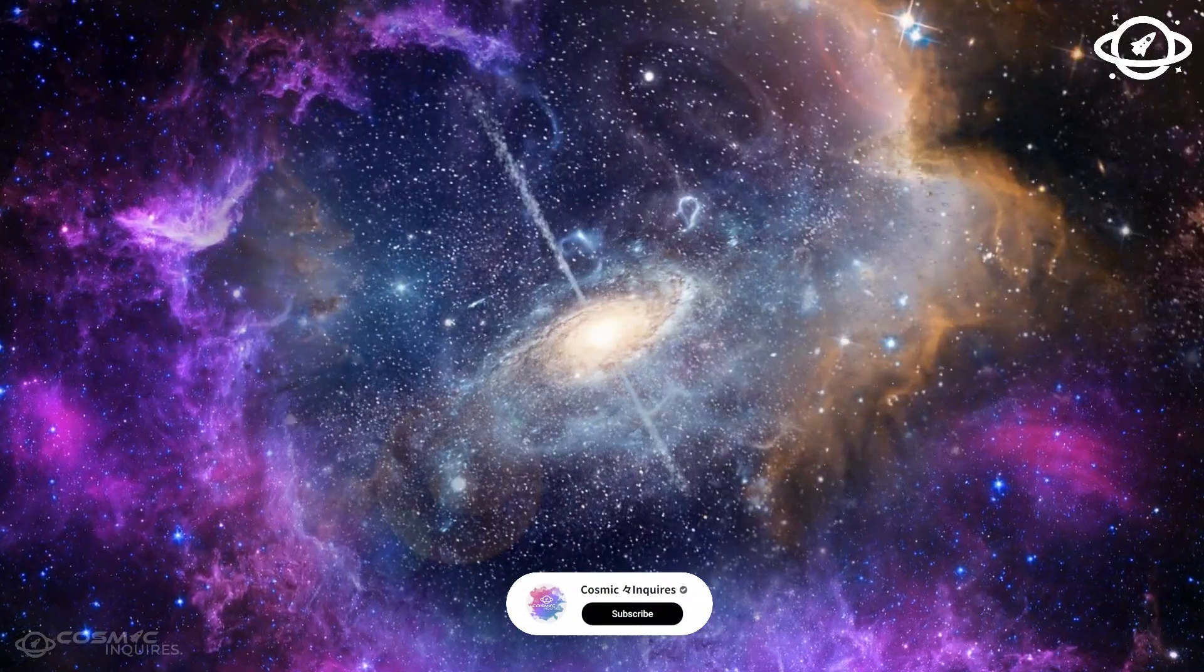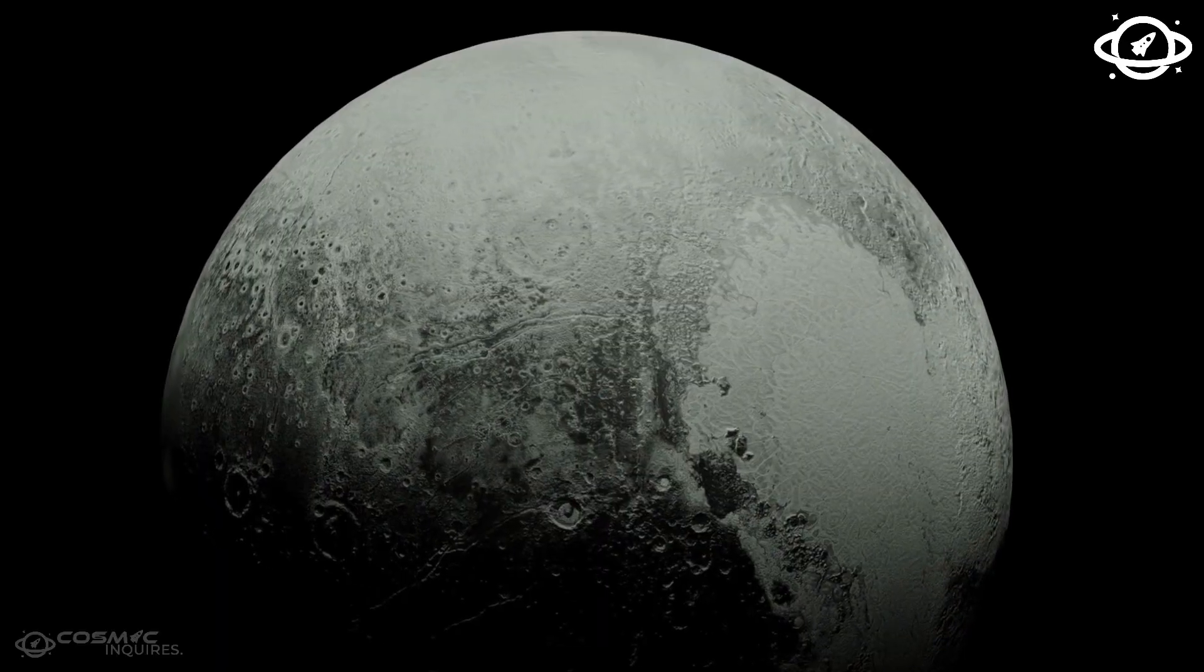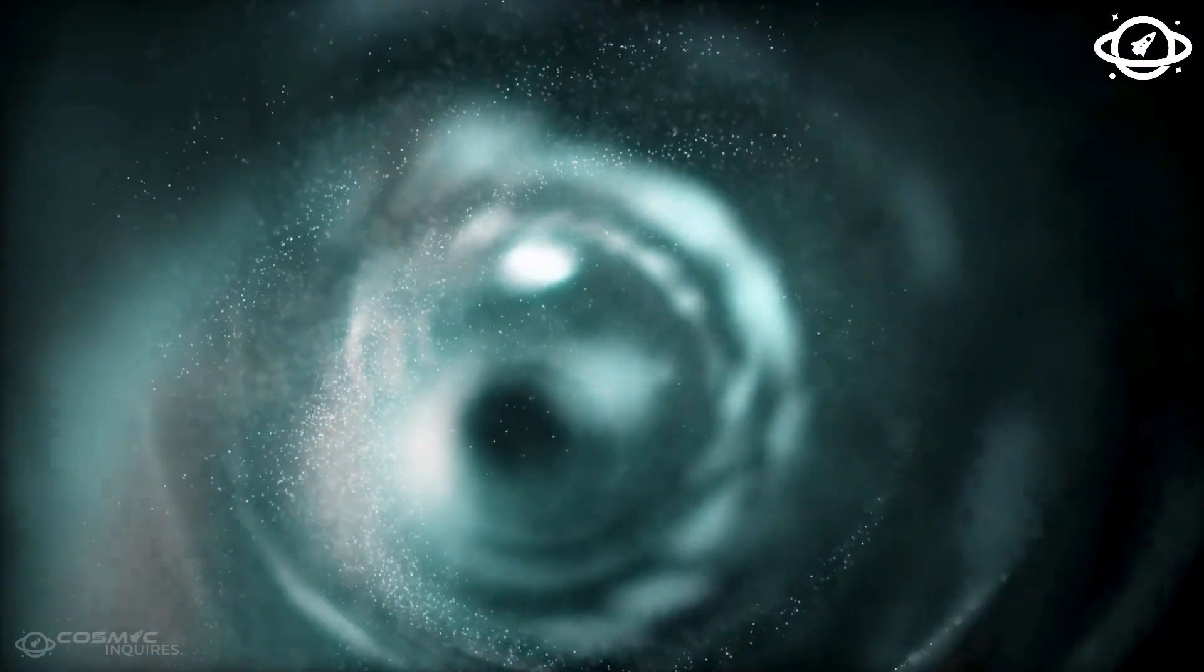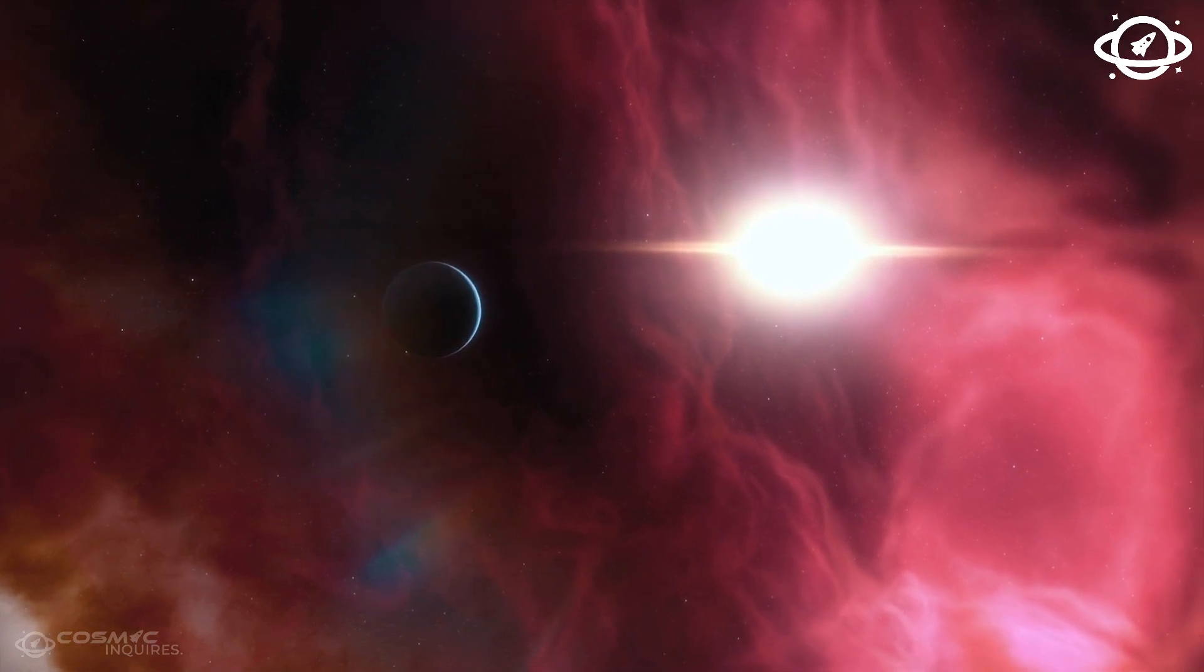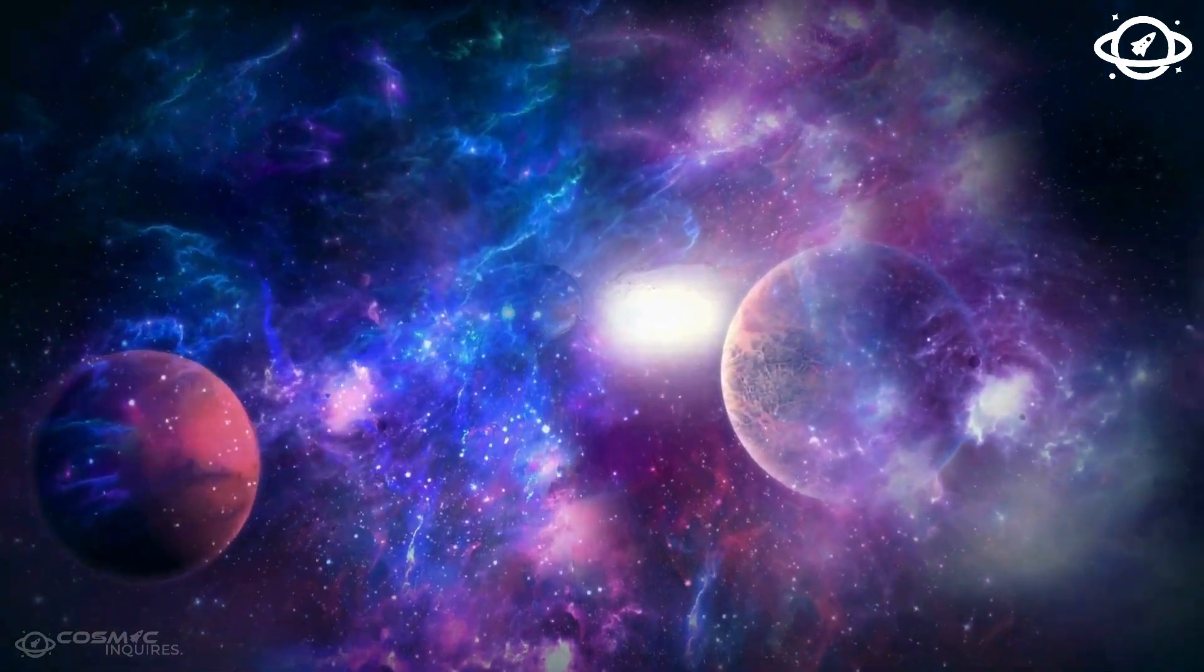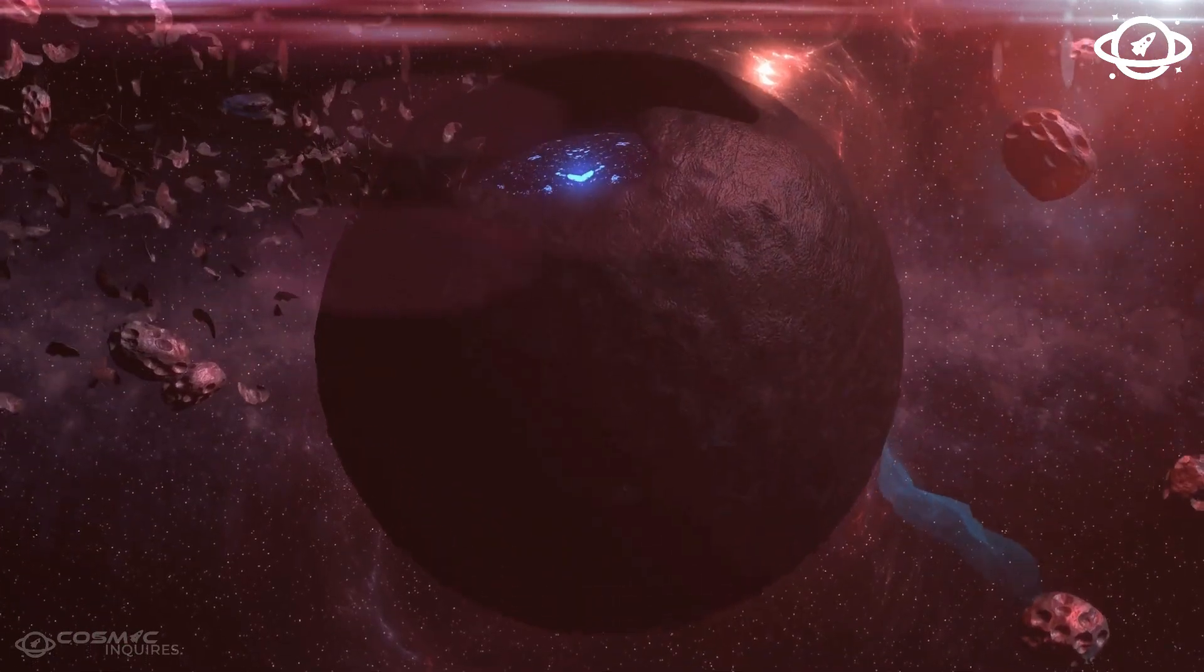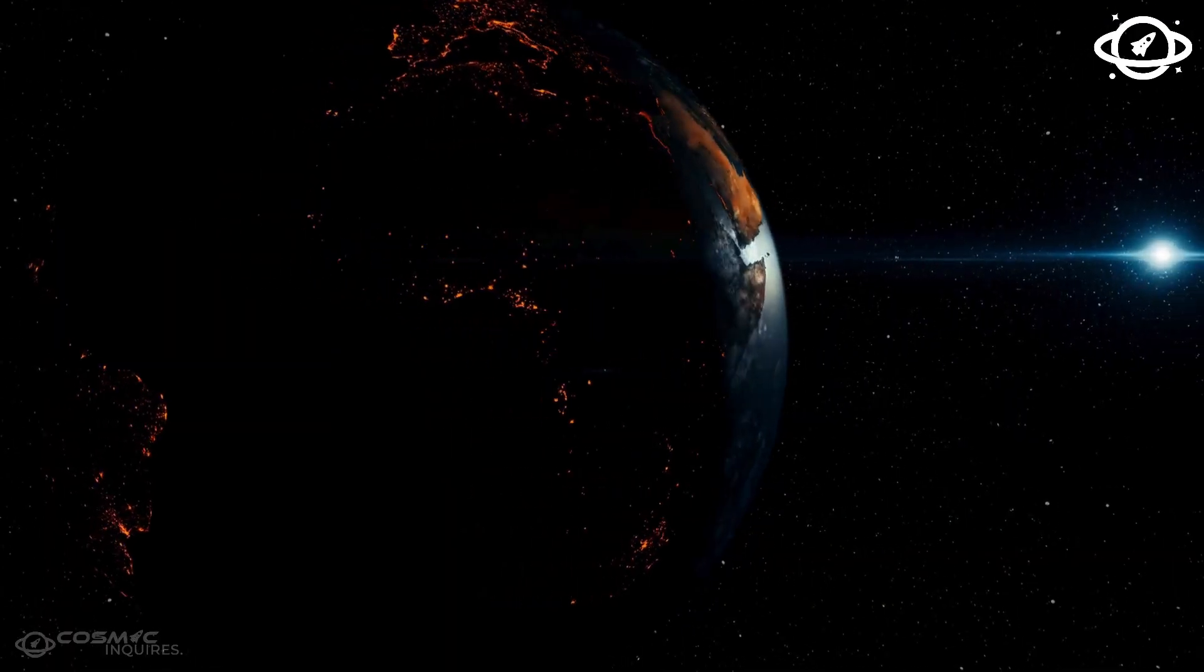The exact timing of the first black hole formations in the universe remains a subject of ongoing research and exploration. There are different theories regarding the formation of the first black holes and scientists are actively studying this topic to gain a better understanding of the early universe. One prevailing theory suggests that the first black holes were formed from the remnants of massive stars, referred to as population 3 stars, which emerged a few hundred million years after the Big Bang.